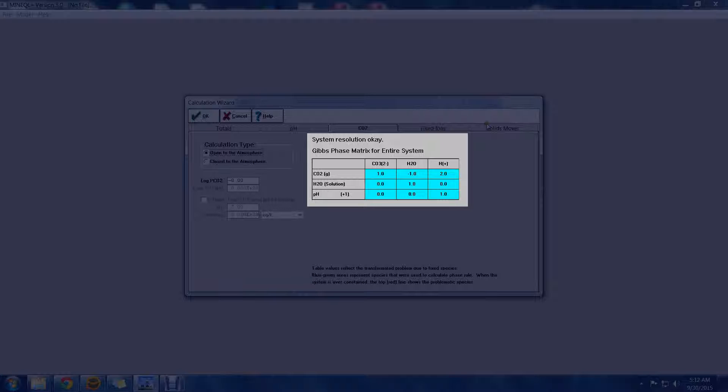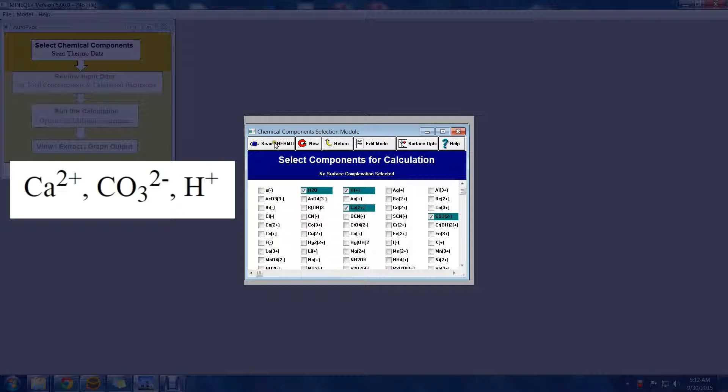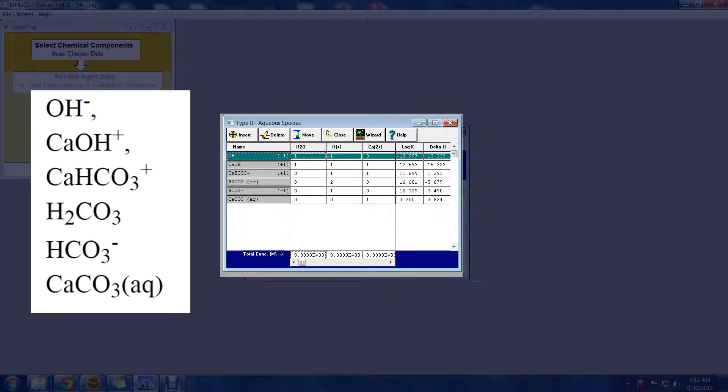Here is how it works. Let's assume a simple system with calcium, carbonate, and proton. For our example, these components will combine to form the following chemical species.